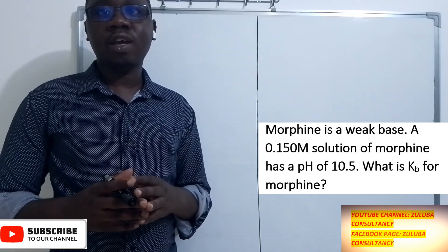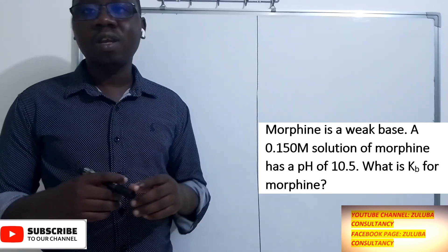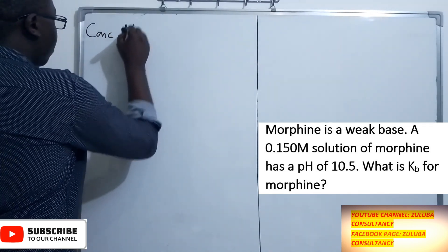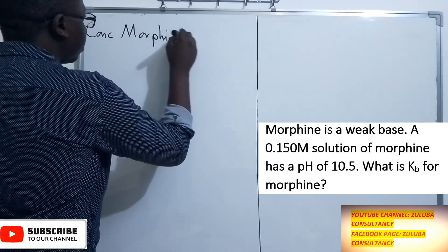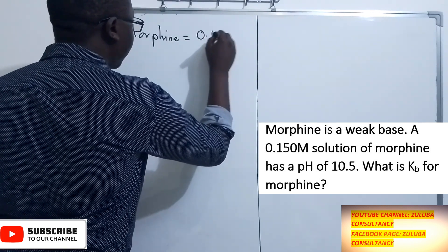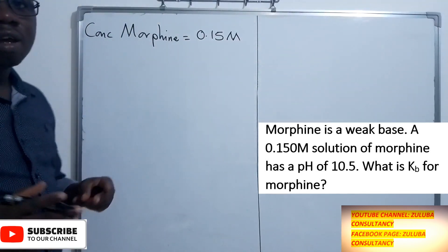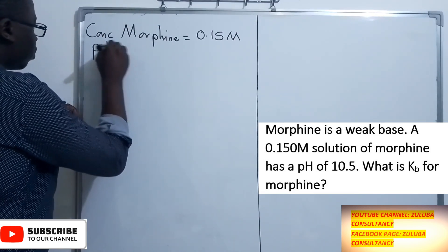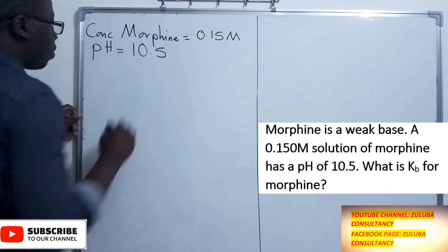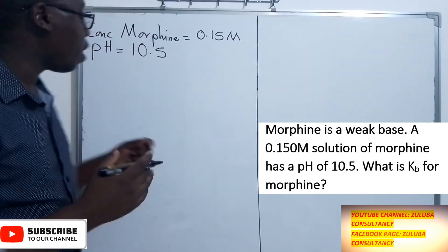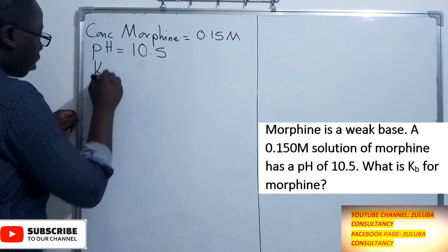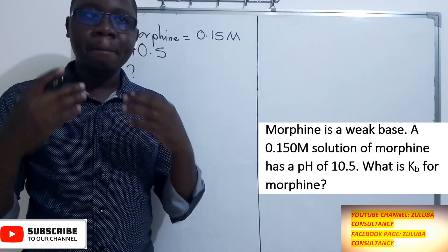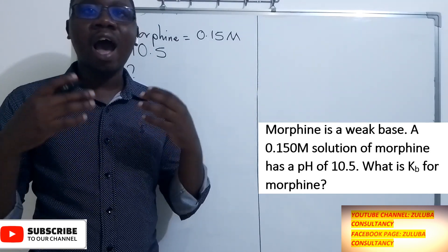The first step is to get information given in the question. The concentration of morphine is 0.15 M. The pH of this solution is 10.5. We have been asked to calculate the ionization constant, which is the Kb — we don't have that. But because this is a weak base, we can write its ionization equation.